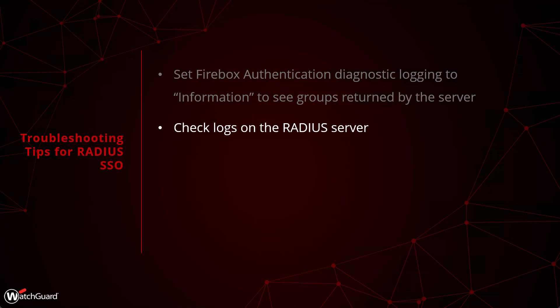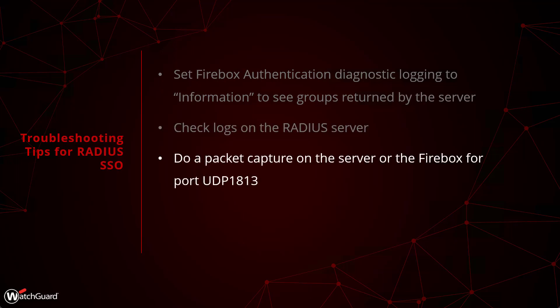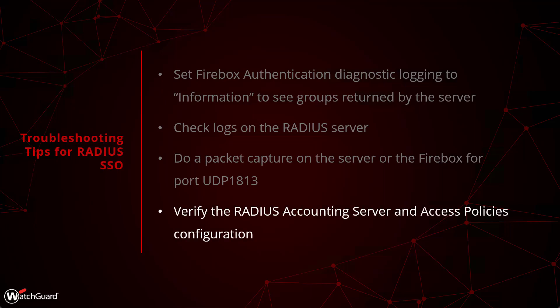The firebox is simply receiving information from the server — it's not actually participating in the authentication process — so the server logs are probably your best bet. If you're not seeing any authentication information reach the firebox, you'll need to do a packet capture to validate that UDP 1813 traffic is reaching it. The nice part about RADIUS is that the logs are fairly readable — you can see all the attributes and other information the RADIUS server is passing. If you see no traffic at all, you know the RADIUS server is not sending to the proper location. Also verify the IP address and shared secret are correct, as typos in the shared secret are very common.